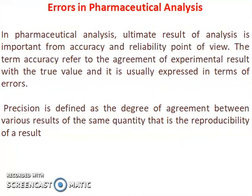Now, errors in pharmaceutical analysis. In pharmaceutical analysis, the ultimate results are important from an accuracy and reliability point of view. The term accuracy refers to the agreement of the experimental result with the true value, and it is usually expressed in terms of errors. Precision is defined as the degree of agreement between various results of the same quantity, i.e., the reproducibility of a result.